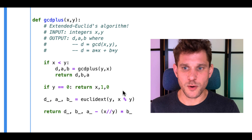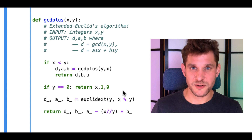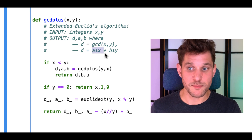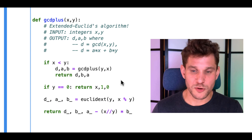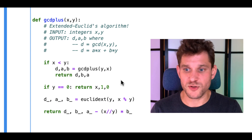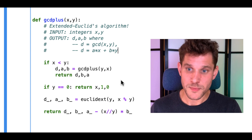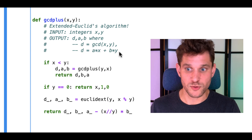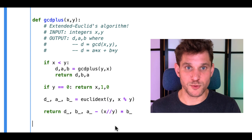We also talked about the extended Euclidean algorithm. This also computes the GCD of x and y, but gives a little bit extra: it finds integers A and B such that the GCD equals A*x + B*y. We didn't go into all the details, but there's a proof in the book. This is useful for computing the modular inverse, which we'll get to in a moment.